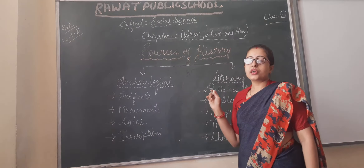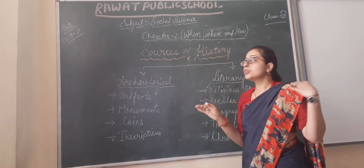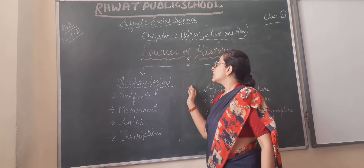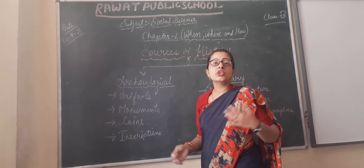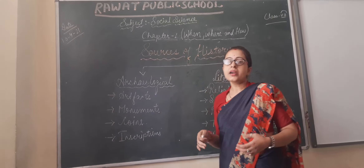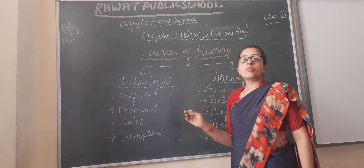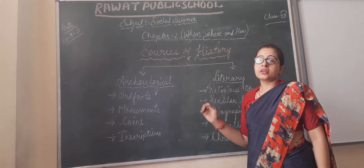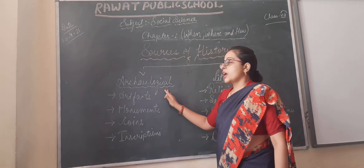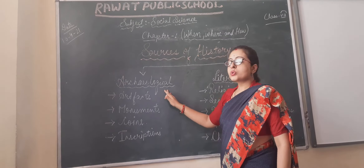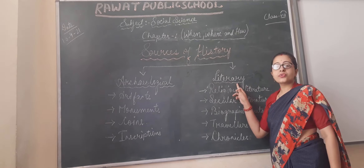Today we are going to study about sources of history — from which source we get the information about our history. We get the information about our history in two types: the first is archaeological source and the second one is literary source.